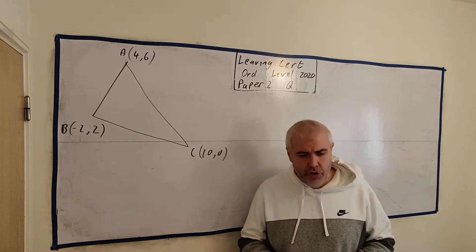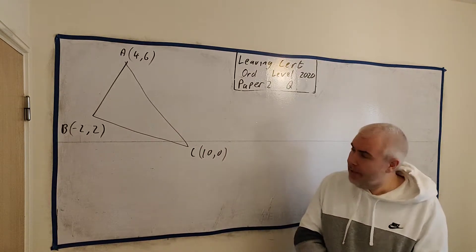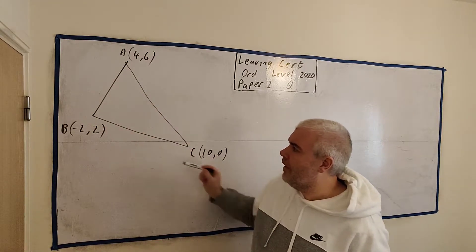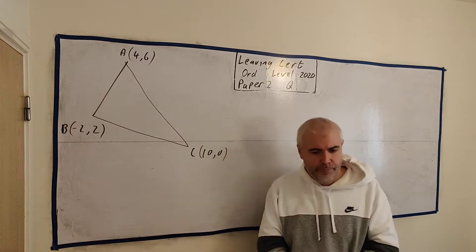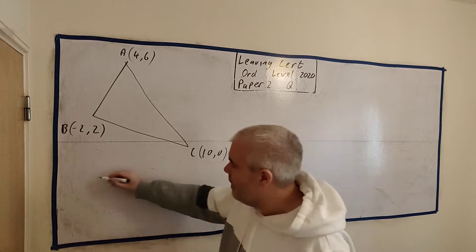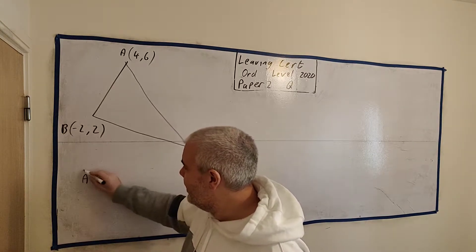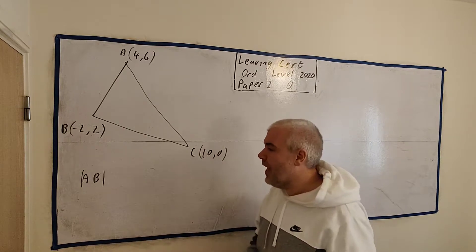This question is all about coordinate geometry revolving around a triangle that we see here. They've given us these points A, B and C. They've also given us the numbers, I've put them in beside the points just, that's all, it's different. They ask us in the first question to find |AB|. And then they tell us what this means, they tell us |AB| is just the length between A and B.